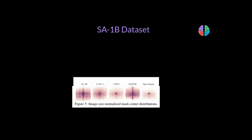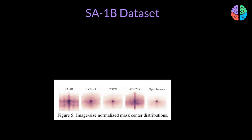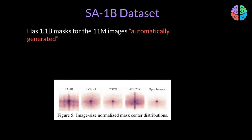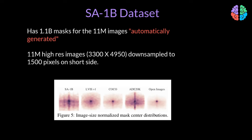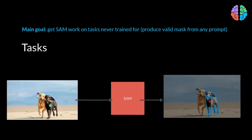One thing to note about the SA-1B dataset is that even though it has 1 billion masks, these masks are fully automatically generated by the SAM model. The dataset also has very high-resolution images compared to, say, the COCO dataset. As seen from the figures, the masks are quite evenly distributed across the image compared to all previous datasets like COCO or Open Images. With SAM trained on SA-1B, the model is readily available for zero-shot transfer learning on novel tasks.